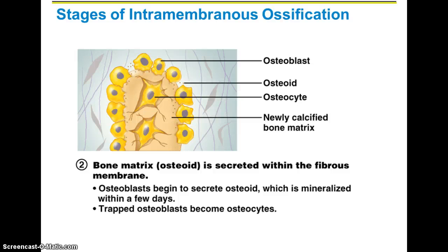Step two is where bone matrix is secreted from the osteoid, and that's going to start to break down more of the fibrous membrane. You're starting to see new bone being formed. The cartilage is being broken down and turning into bone — this is what newly calcified bone matrix means. You've got osteocytes starting to develop because those are mature bone cells, osteoblasts building bone from the inside out, and osteoids being secreted from the ossification center.